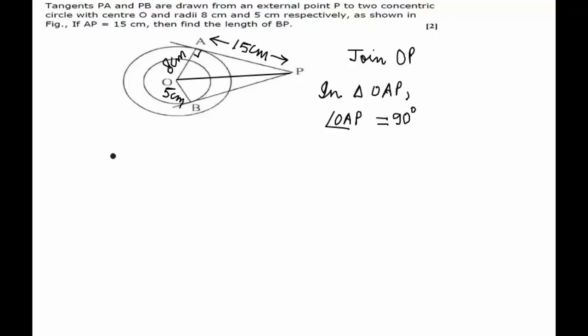Now applying Pythagoras theorem, I can say OP square is equal to OA square plus AP square. OA square is 8 square plus 15 square.